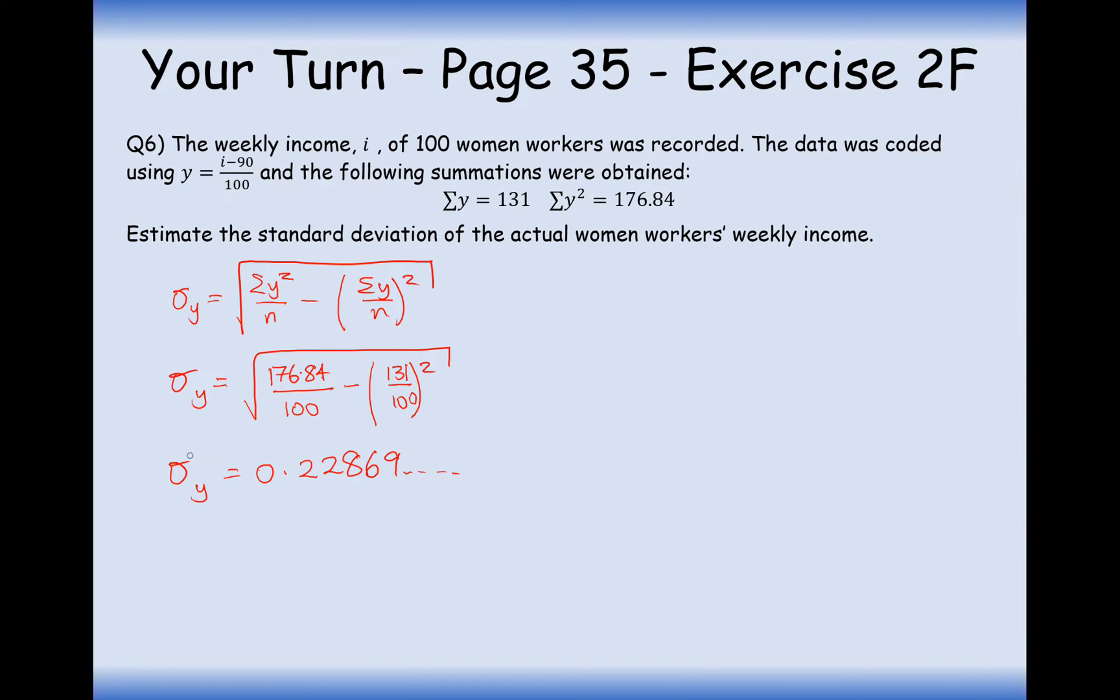So, the standard deviation of the Y values now is just going to be reversed or decoded by multiplying this by 100. So it's going to be 22.87, we'll round that to you. Okay, so there we are. The average spread of data of the 100 female workers in the workforce is 22.87 pounds.